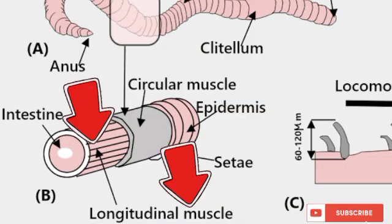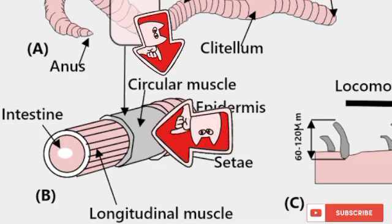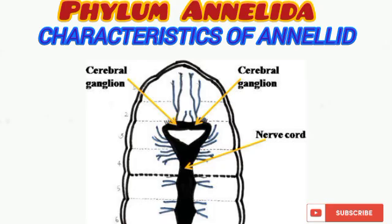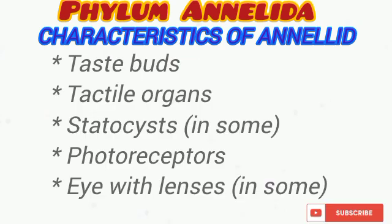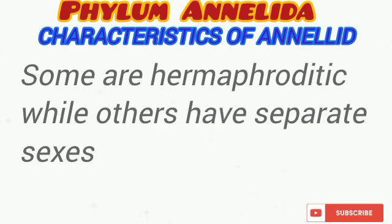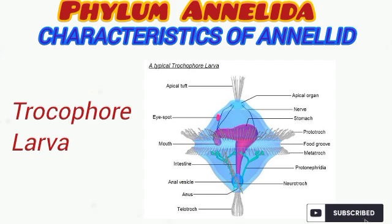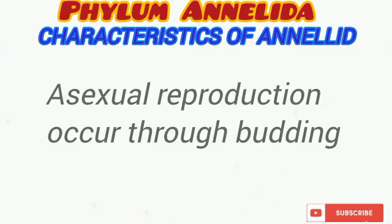The body wall of annelids possesses both inner longitudinal muscle and outer circular muscle layers. Their nervous system comprises a double ventral nerve cord, and the brain is a pair of dorsacerebral ganglia connected to the ventral nerve cord. They possess various sensory systems such as taste buds, the trochoidal organ, statocysts, and photoreceptor cells. Some members of Annelida are hermaphroditic while others possess separate sexes. Asexual reproduction in annelids occurs through the process of budding.